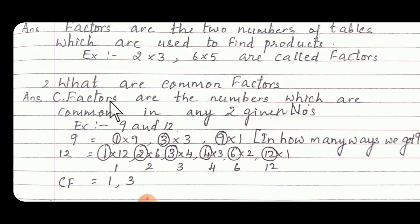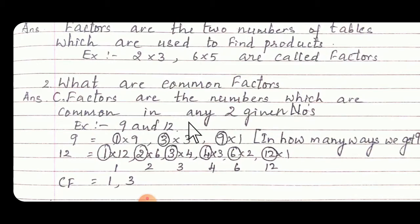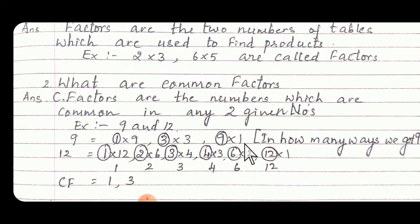What are common factors? Common factors are the numbers which are common in any two given numbers. For example, tables 9 and 12. In how many ways we are going to get 9? That is: 1 9s are, 3 3s are, 9 1s are.